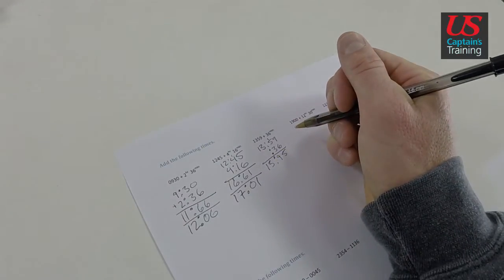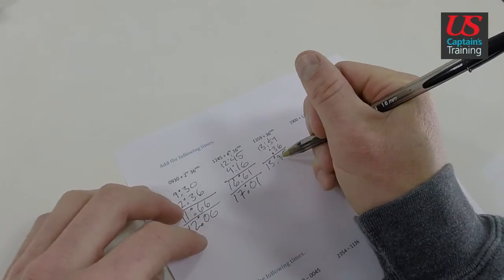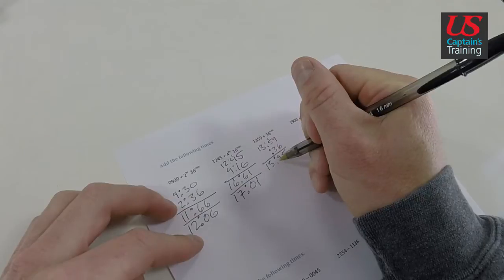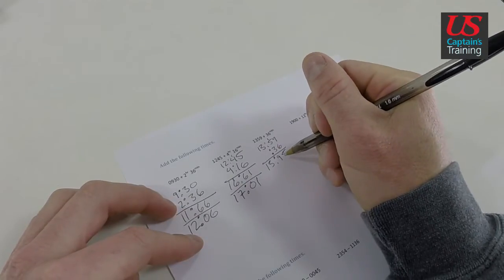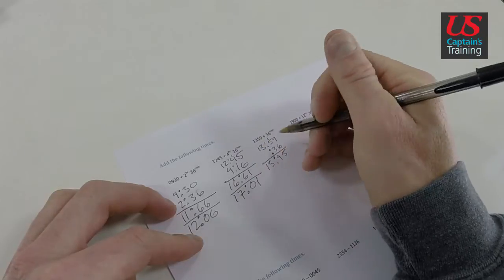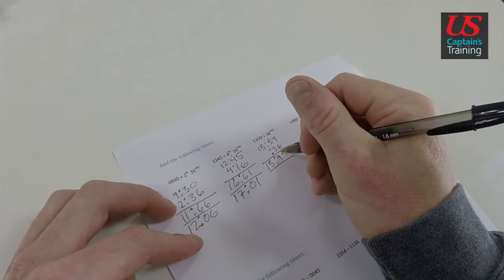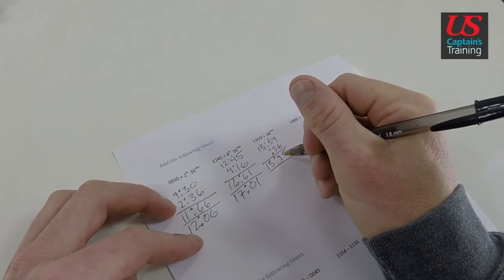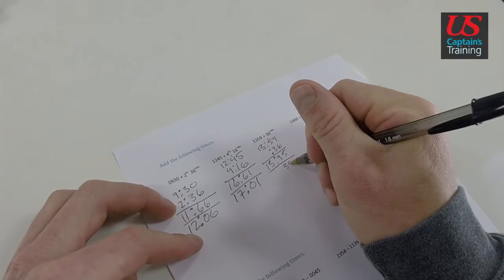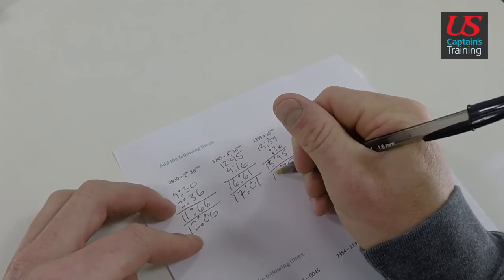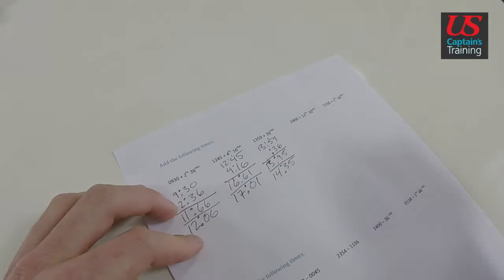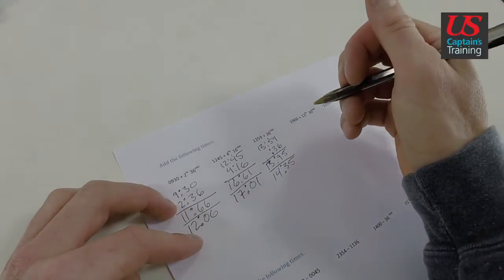So now look at that. We have 1 hour and 35 minutes in that 95 minutes. That 95 represents 1 hour and 35 minutes. So if we take 60 away from 95 and turn it to an hour, we get 35 left over. And we stick the hour over here in the hours section, we get 14:35. And we check the answer. Good, 14:35.